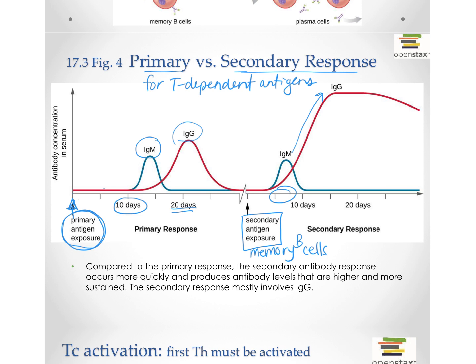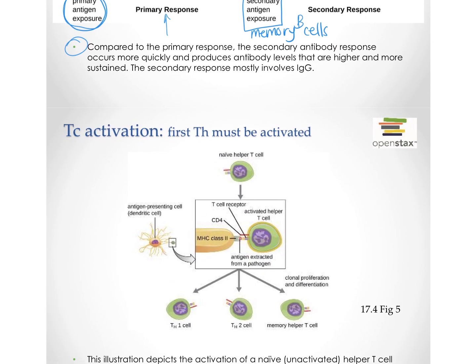Think about if we were talking about a T-independent reaction rather than a T-dependent one — the second time would look just like the first. There wouldn't be a primary and a secondary; it would just be like a primary response every time. And of course there wouldn't be any IgG. So normally, a quicker response and higher antibody titers.